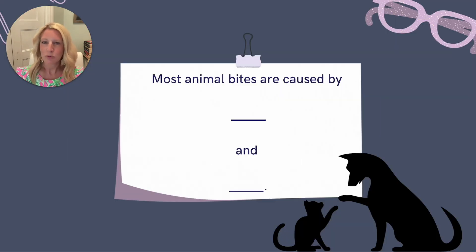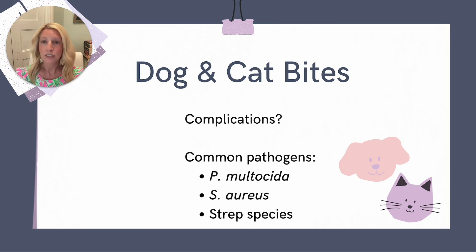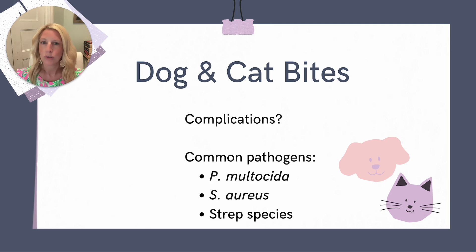The vast majority of animal bites in the U.S. are caused by dogs and cats. The most common complication of dog and cat bites is a localized wound infection. The most common pathogen associated with dog and cat bite wounds is Pasteurella multocida, an anaerobic bacteria found in the mouths of healthy dogs and cats. Staphylococcus aureus and even some strep species may also be involved in those wound infections.